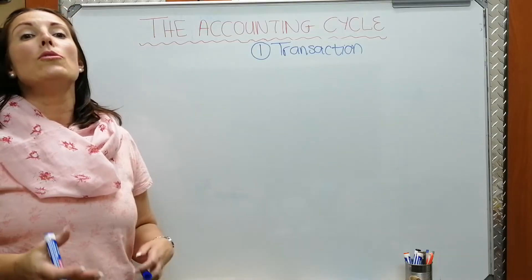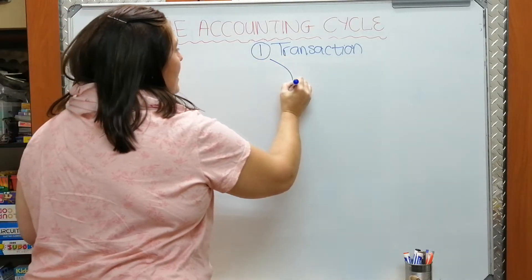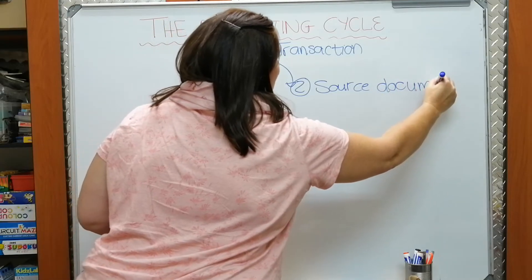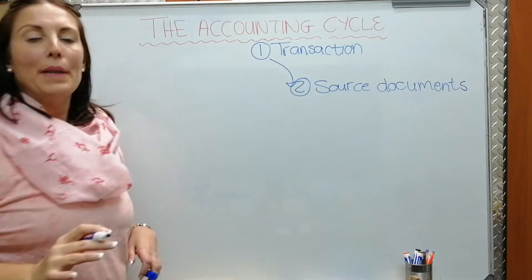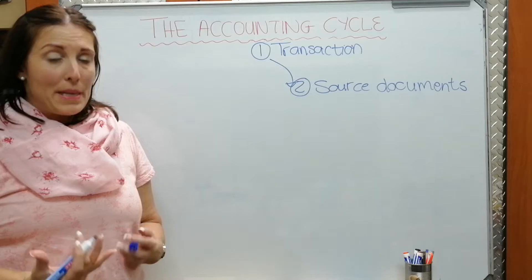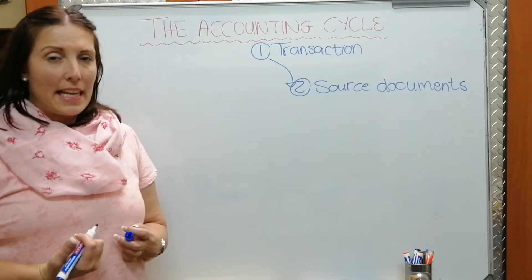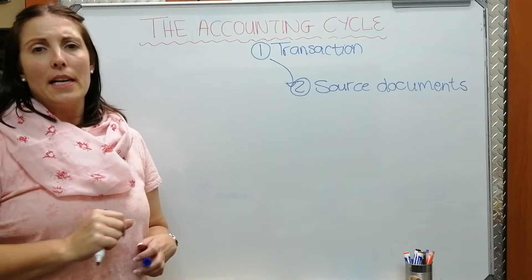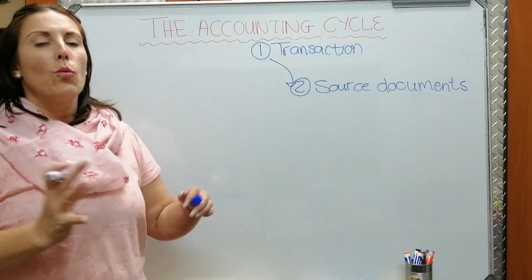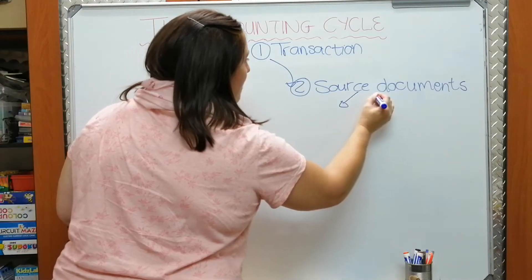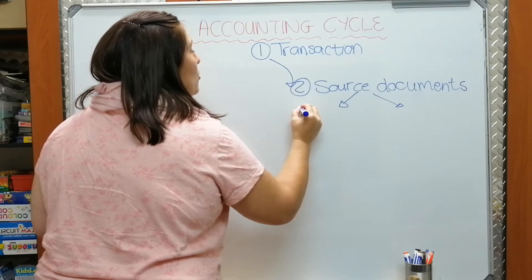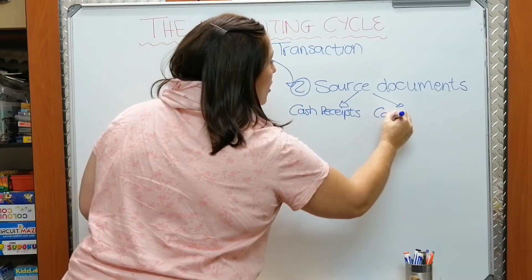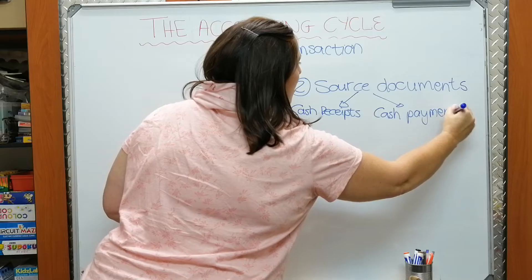To keep record of a transaction, we make use of documents. The next step is to record the transaction on a document. All documents in the business will be recorded in duplicate at least — the business keeps a copy and the customer receives proof of the transaction. We have documents for cash receipts, when the business receives money, and for cash payments, when the business pays out money.